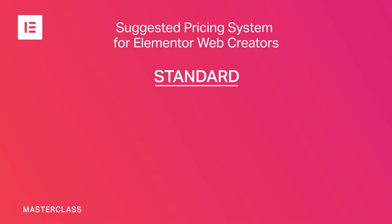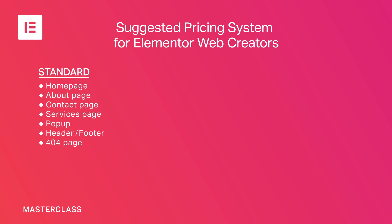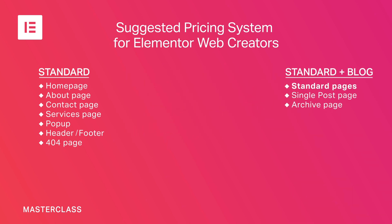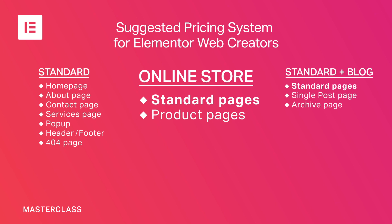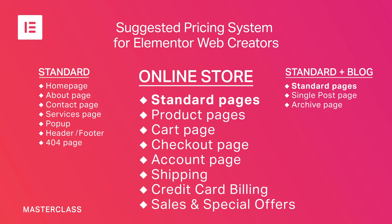We cannot give a client a competitive quote without a pricing system that ensures we are not undercutting ourselves. There might be an infinite number of possible website designs, but for the purpose of pricing, we can narrow them down to about three types. The first type is standard: a promotional or commercial website of five to seven pages, including a homepage, about page, contact page, services page, and assets like a header, footer, and 404 page. The second is standard plus blog, adding single post and archive pages. The third — and most demanding — is an online store, including product pages, cart, checkout, shipping, credit card billing, and special offers.